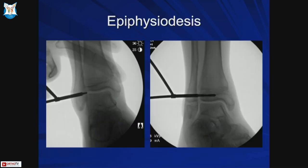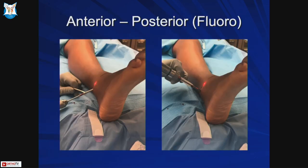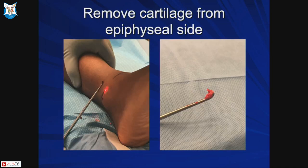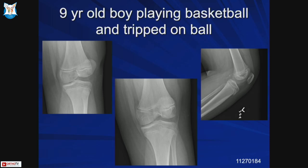If the bar is more than 30%, options are epiphysiodesis and then managing limb length discrepancy later, or performing osteotomies during growth. We proceeded with epiphysiodesis of the remaining physes. The technique involves drilling across the physis - use a larger drill bit, usually 3 or 3.5 mm. It can be done percutaneously under fluoroscopic control, going anteriorly then posteriorly through the same entry hole, and using a curette on the epiphyseal side of the growth plate.